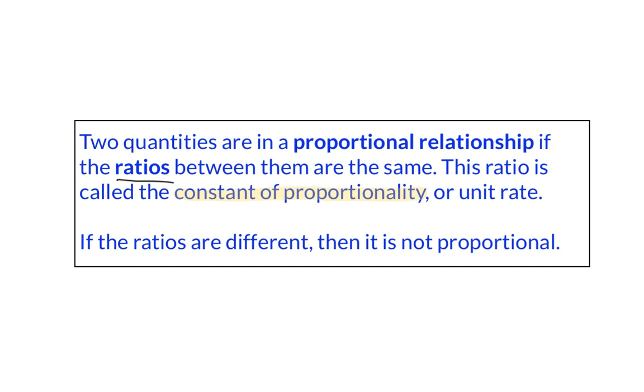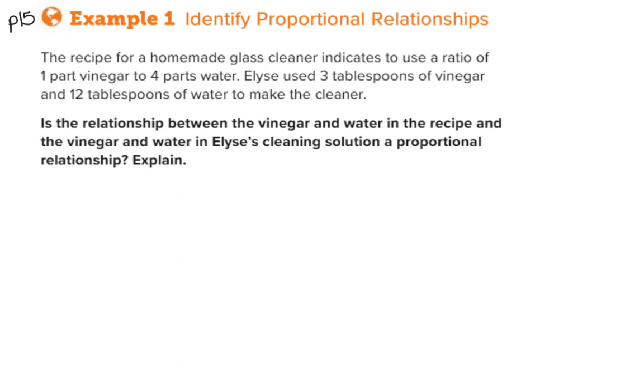If, however, our ratios are different, then it's not going to be a proportional relationship. Let's see what this looks like. Alright, let's try this first example on our note page. It says, the recipe for a homemade glass cleaner indicates to use a ratio of one part vinegar to four parts water. Elise used three tablespoons vinegar and 12 tablespoons of water to make her cleaner.